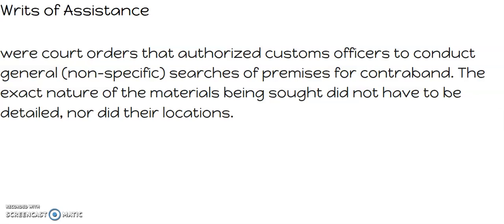Writs of assistance — we took it off the test, but I wanted to mention it because it will come back full circle when we get to the Bill of Rights. Writs of assistance were court orders that authorized customs officers to conduct general, nonspecific searches of premises for contraband — meaning illegal stuff. It was like a warrant they could just get — knock on the door and rifle through somebody's house looking for something illegal. It gave soldiers carte blanche because it didn't have a person's name, a date, or a specific location on it. It basically gave them the right to search anybody at any time.